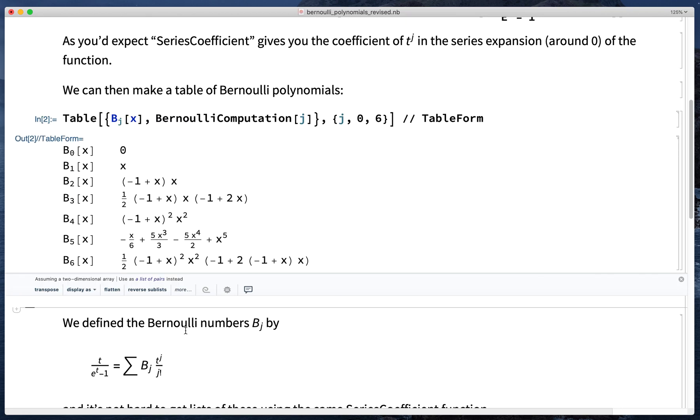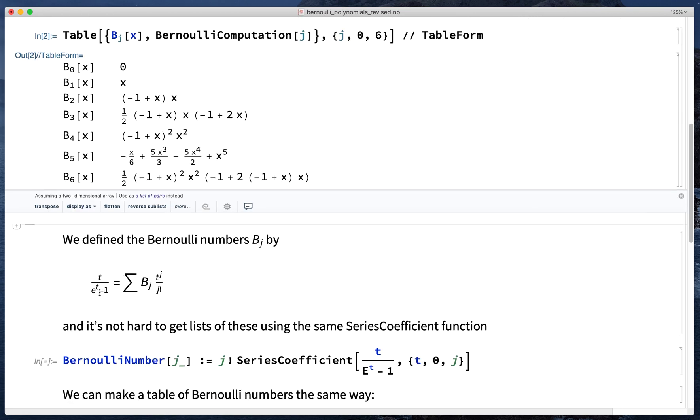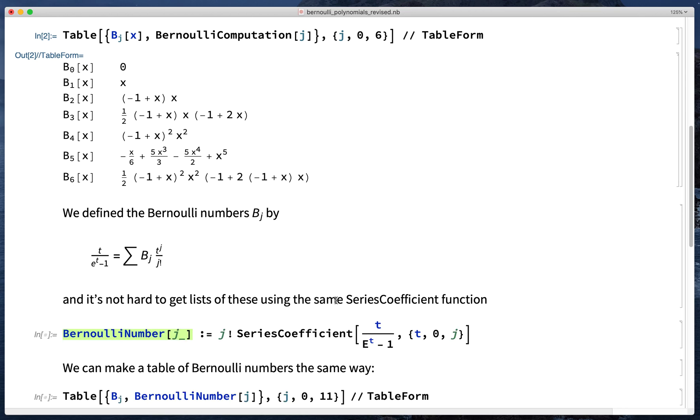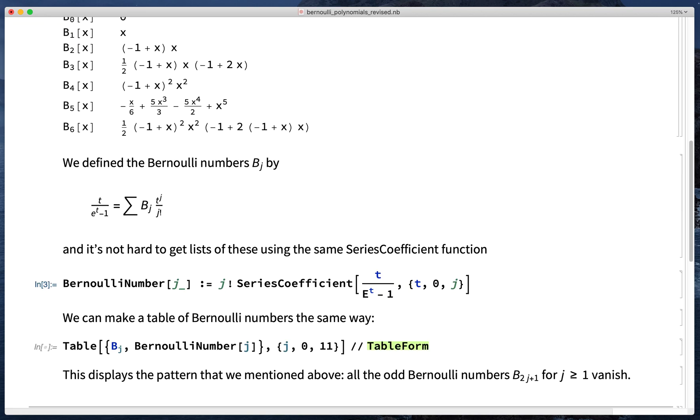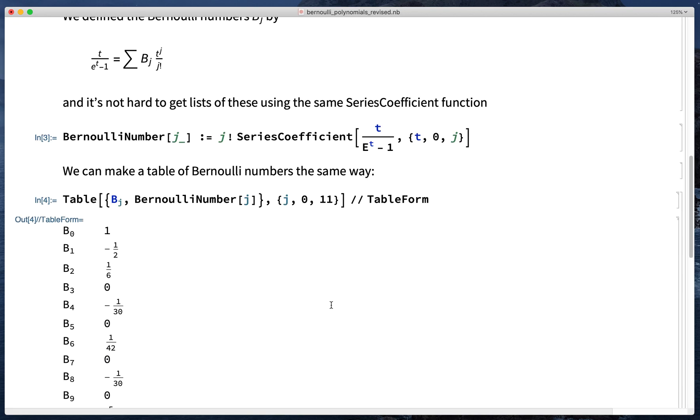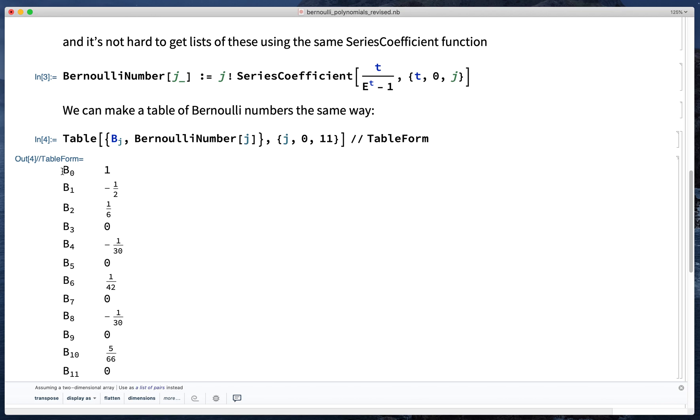The Bernoulli numbers are defined to be the numerical coefficients of powers of t in the expansion of this function which contains only t's. We can get this again with SeriesCoefficient used in a similar way and make a table of Bernoulli numbers. So here's my table of Bernoulli numbers.